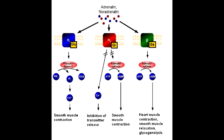The G-protein class of alpha-1 receptors is GQ. When alpha-1 receptors are stimulated, this causes increase in vascular smooth muscle contraction, increase in pupillary dilator muscle contraction — which is mydriasis — and an increase in intestinal and bladder sphincter muscle contraction.